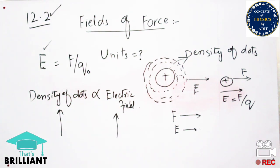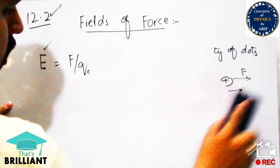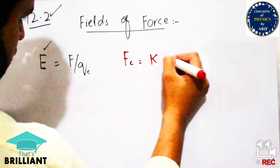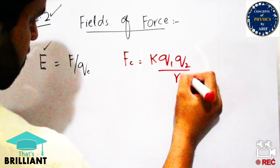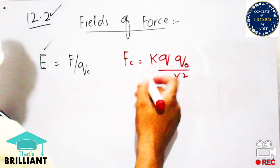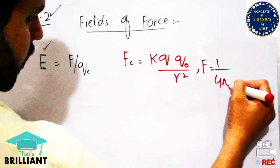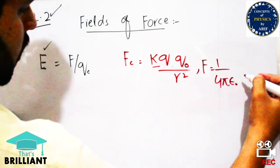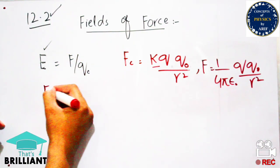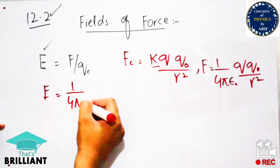Now I will discuss further parameters related to electric field intensity and force. The Coulomb force formula is F equals k times q1 q2 over r squared. In our case, dealing with source charge q and test charge q-naught, the Coulomb force is F equals k q q-naught over r squared, which equals 1 over 4πε₀ times q q-naught over r squared. The electric field is E equals F over q-naught.